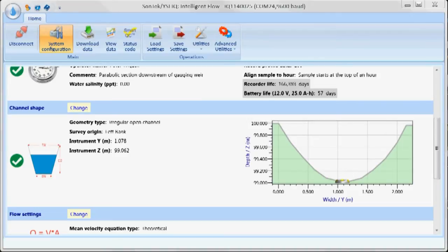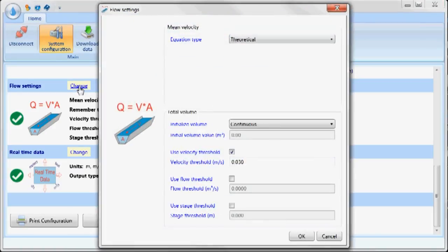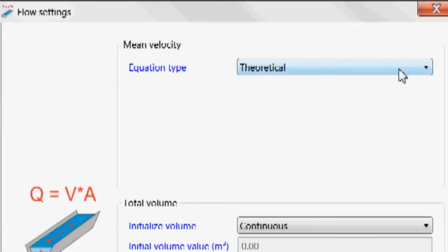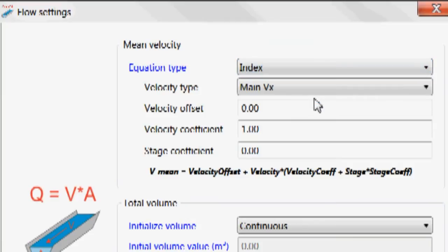Now the next thing is I have to tell it how am I going to calculate flow. I basically have two options. I have a theoretical calculation or I have a velocity index calibration. The theoretical calibration, this is the setting that I want to use if I want to have the IQ automatically calculate flow.